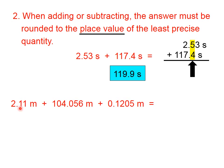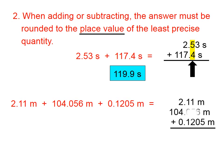In this second example, this first quantity is rounded to the hundredths place, this middle one is rounded to the thousandths, and this last one is rounded to the ten thousandths. The least precise of those is the hundredths place, and we're going to round our answer to the hundredths place.